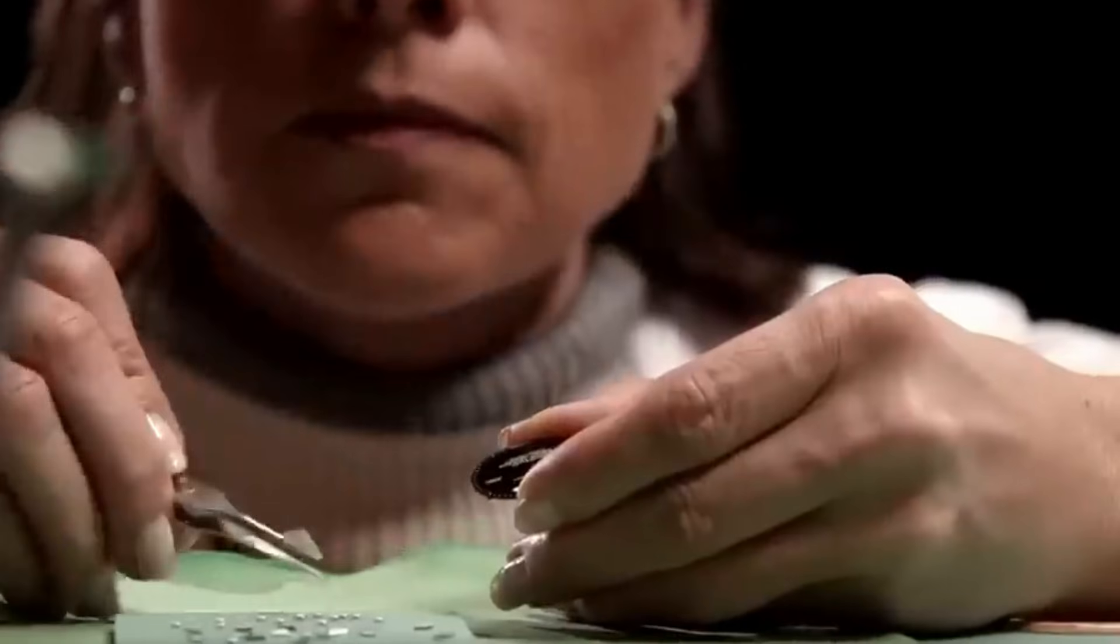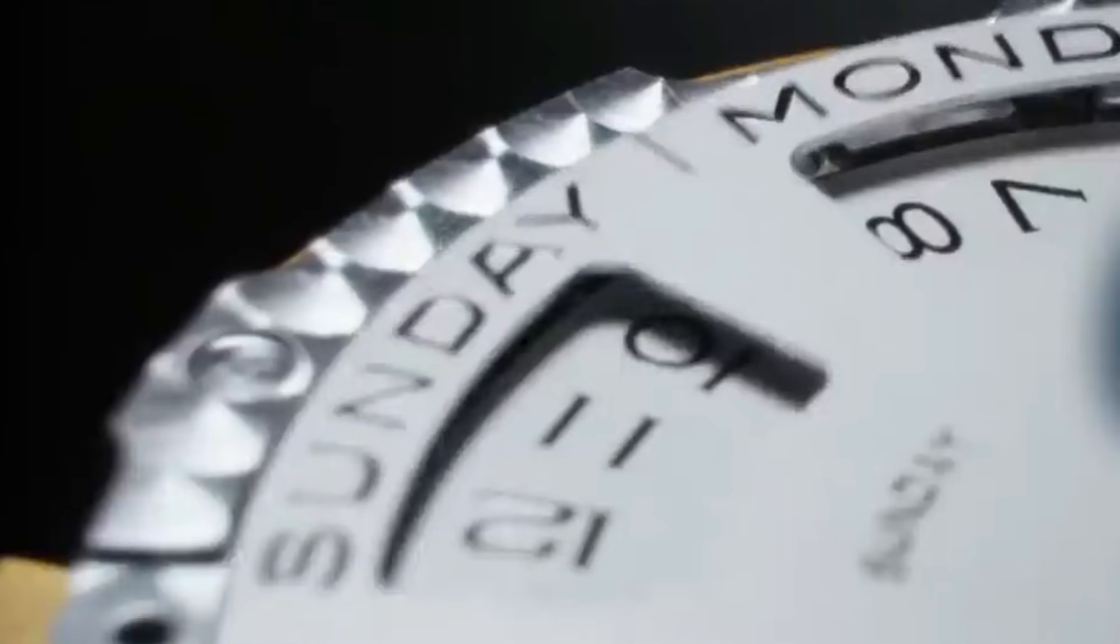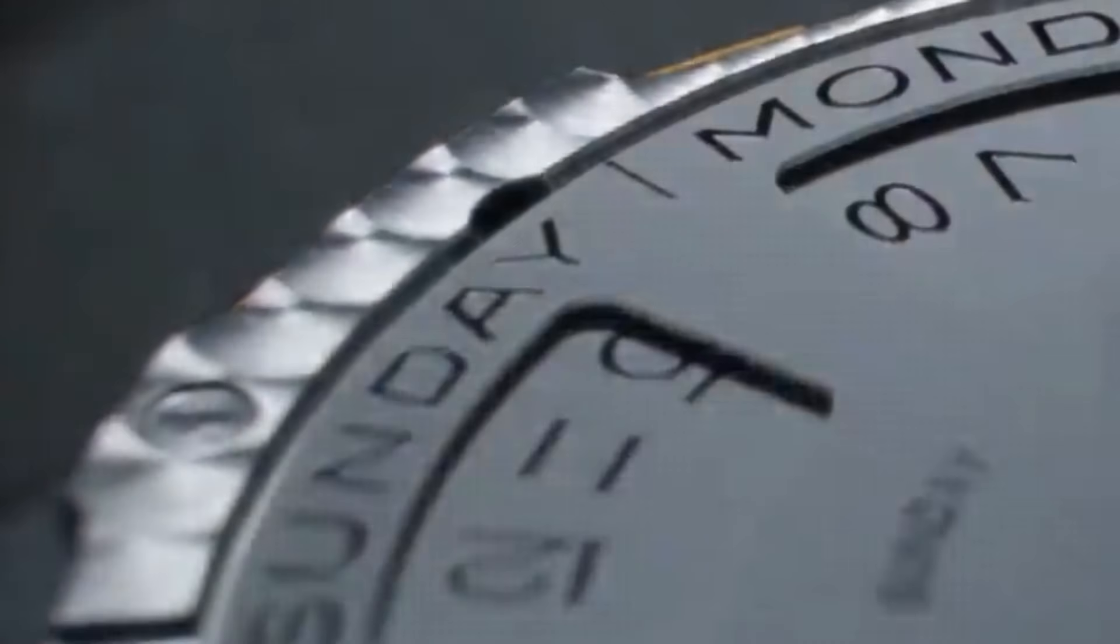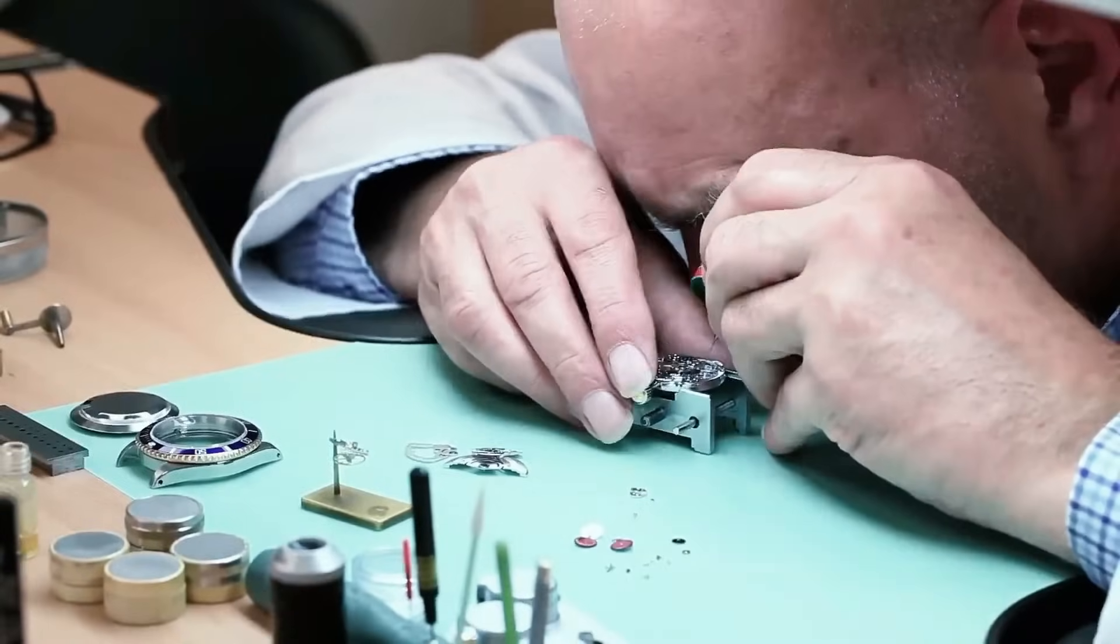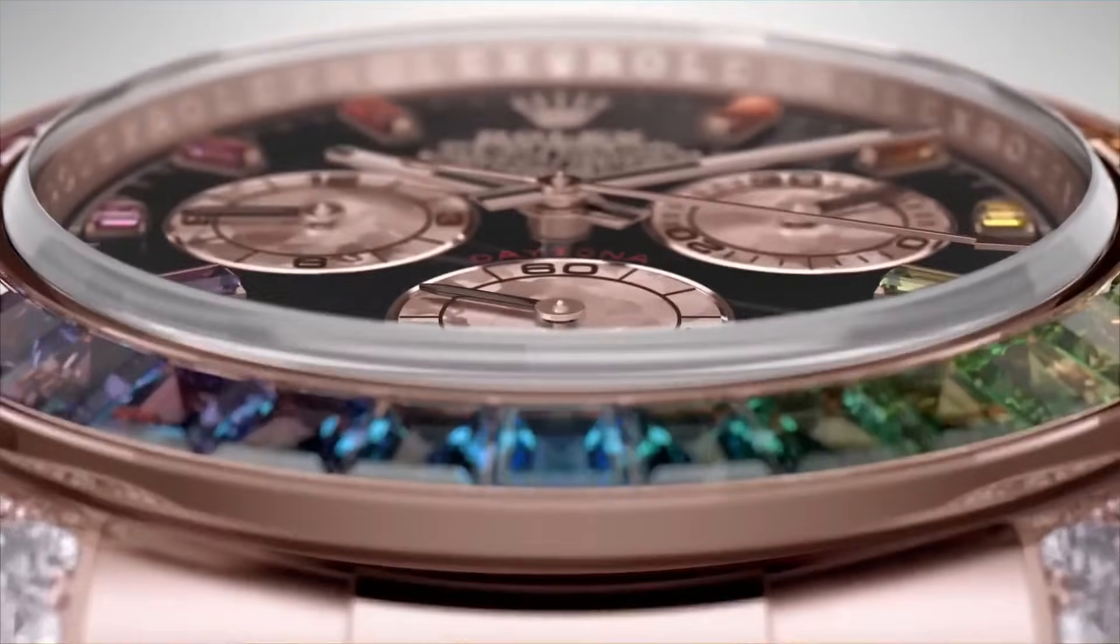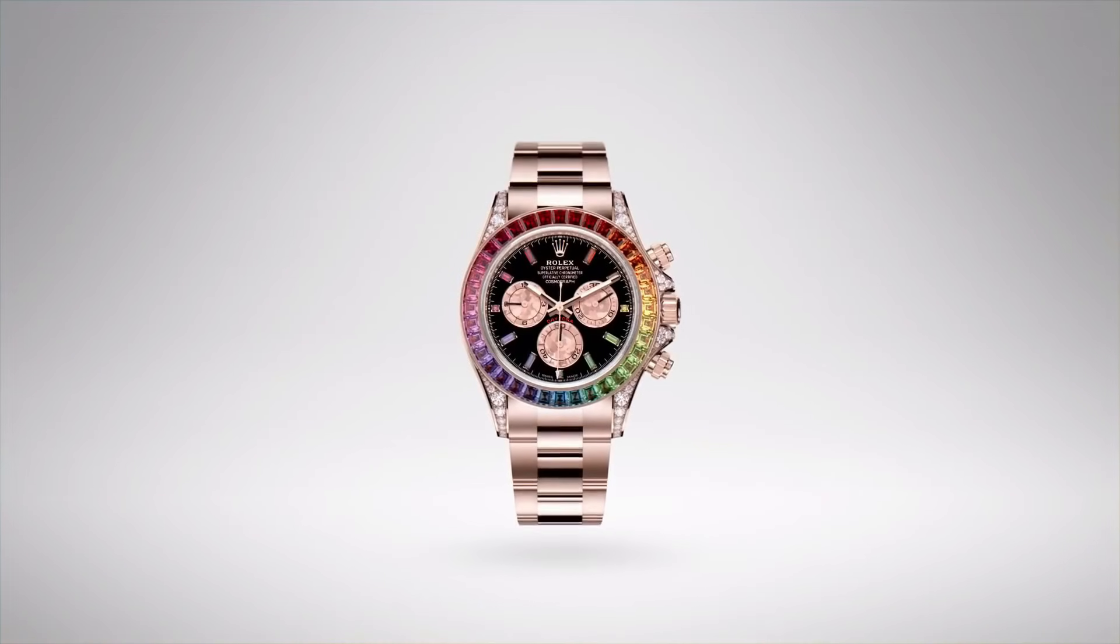Did you know it takes an entire year to create a single Rolex watch? That's right, 365 days of meticulous craftsmanship and precision engineering go into every timepiece. But why does it take so long? From the moment raw materials arrive at the factory to the final quality checks, we are about to take you on an incredible journey through the making of a Rolex. You won't believe the level of detail involved in each step.